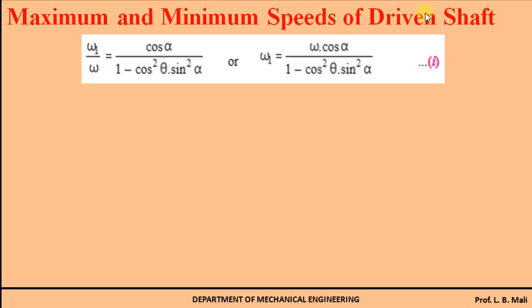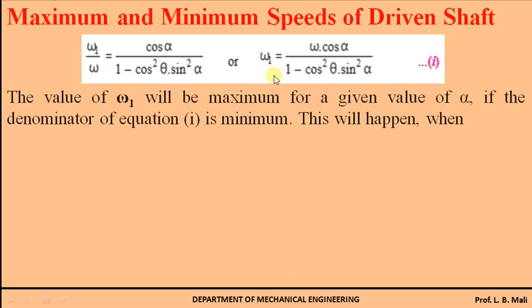We are finding out the maximum and minimum speed of the driven shaft because, as we have discussed, in a hook joint the driving shaft rotates with uniform angular velocity, but the driven shaft rotates with non-uniform varying speed — for some time it has the maximum value, for some time the minimum value, and for some time a moderate value. To find out the maximum value, we have to use this derivation. ω₁ will be maximum when the denominator (1 − cos²θ · sin²α) is minimum.